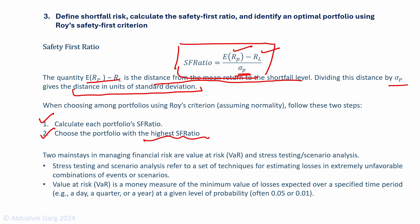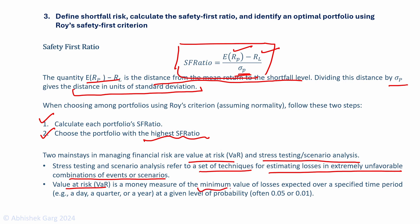Two important concepts in managing financial risk are value at risk and stress testing or scenario analysis. Stress testing refers to techniques for estimating losses in extremely unfavorable combinations of events or scenarios — these can be hypothetical or historical scenarios used to test how a portfolio performs in a particular situation. Value at risk is a money measure of the minimum value of losses expected over a specified time period at a given level of probability.